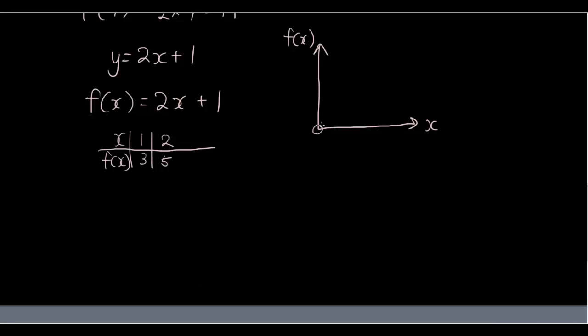So we have x is 1, y is 3. x is 2, y is 5. And join up the lines. f(x) equals 2x plus 1. So this is our graph of the function.